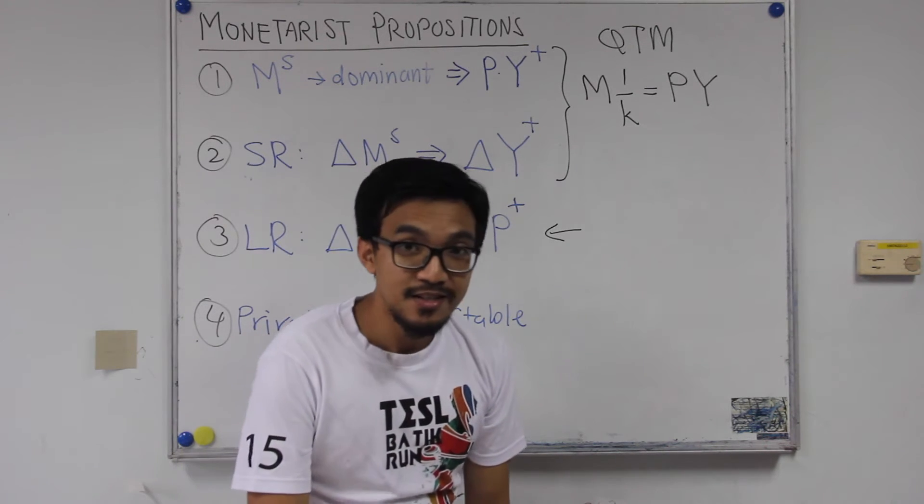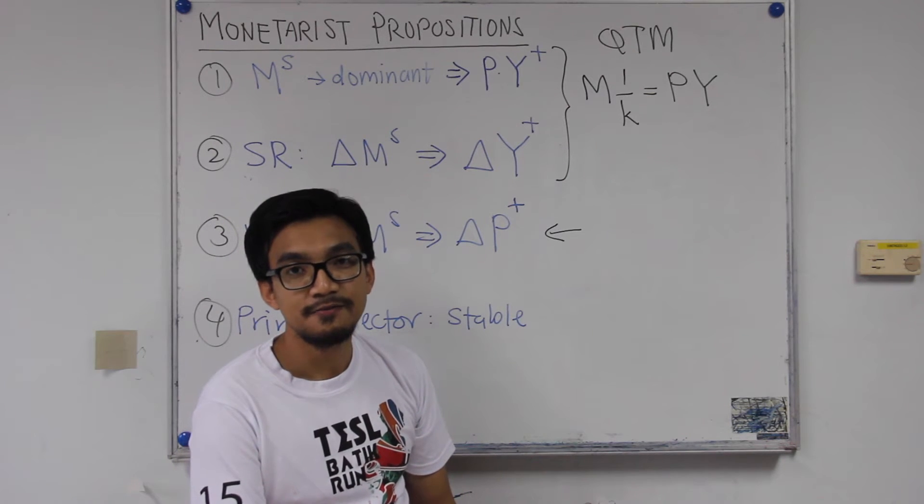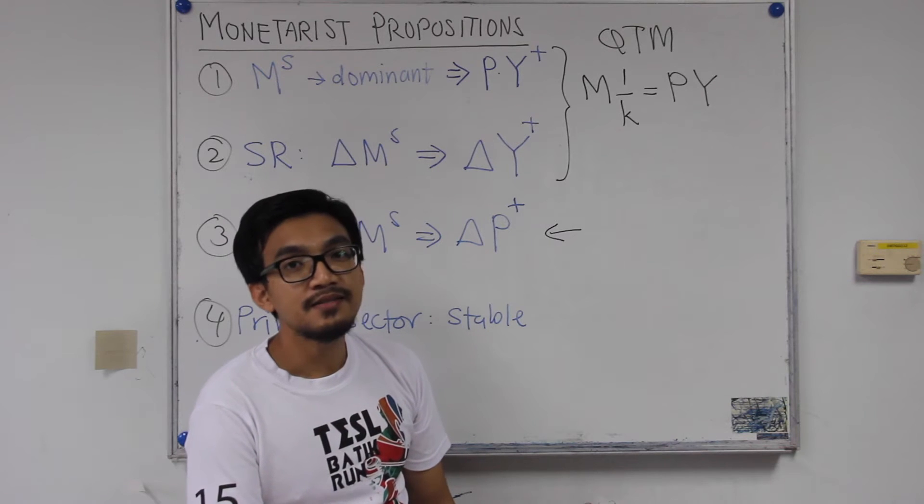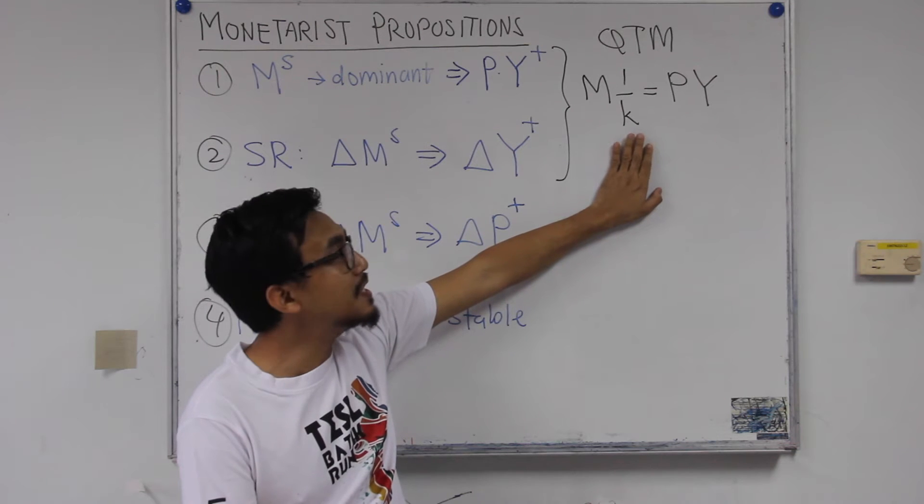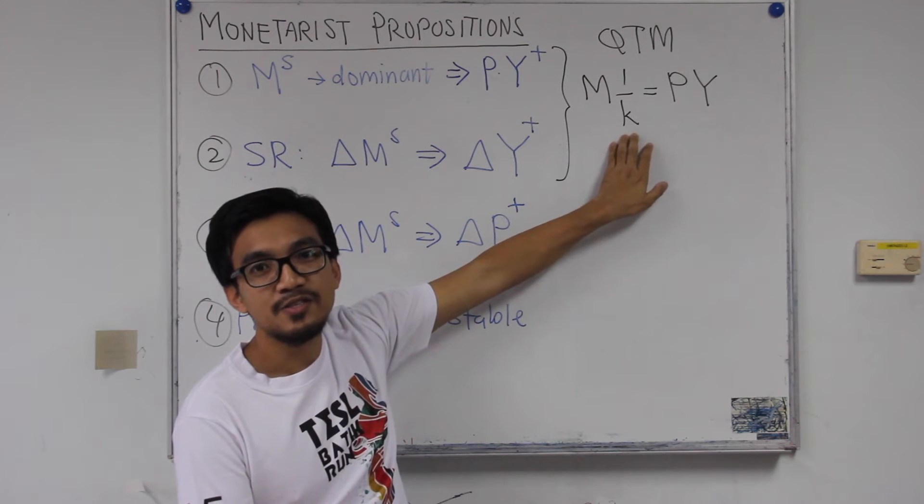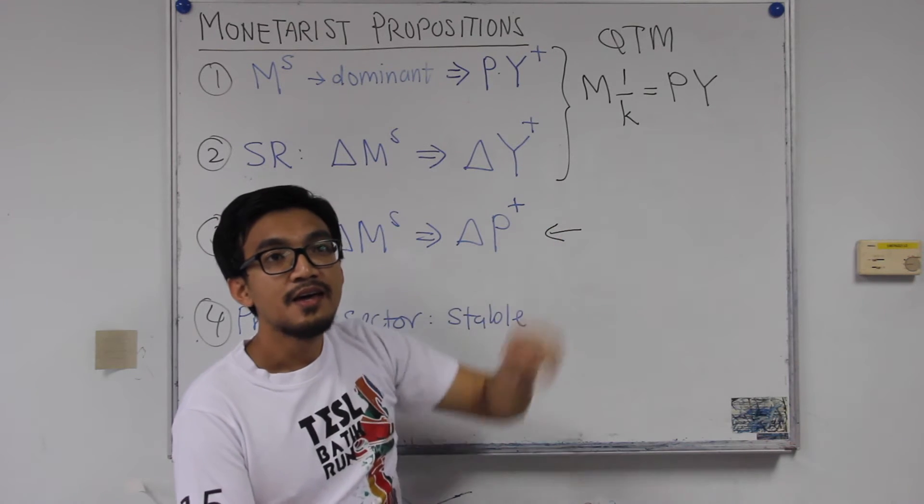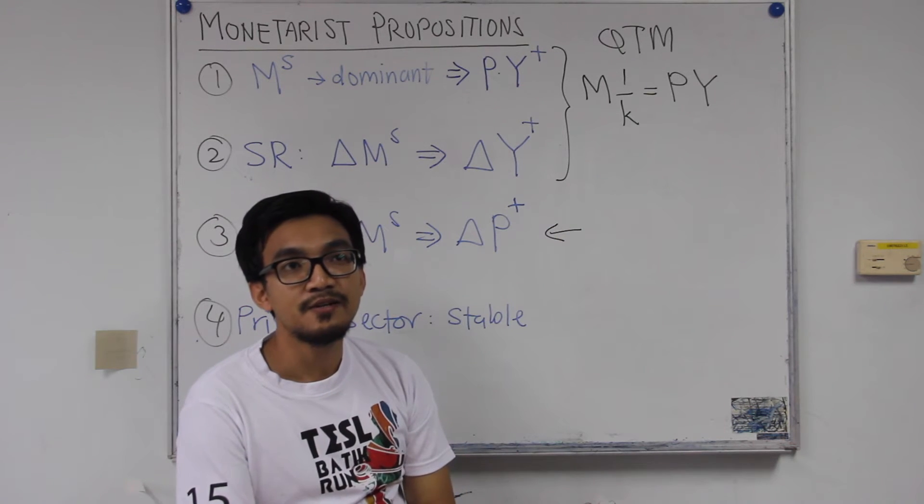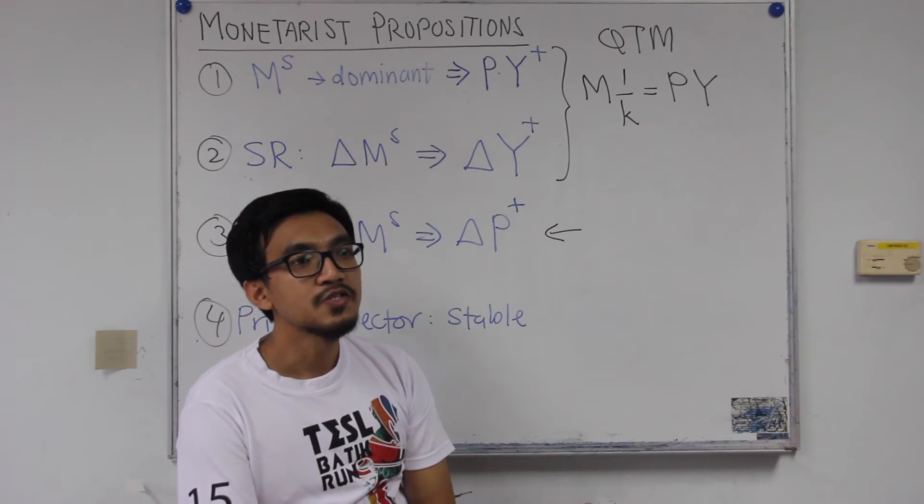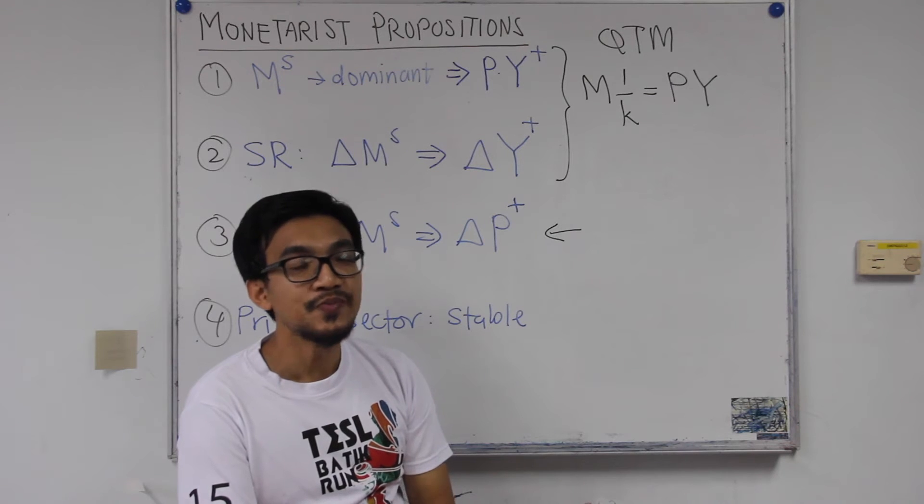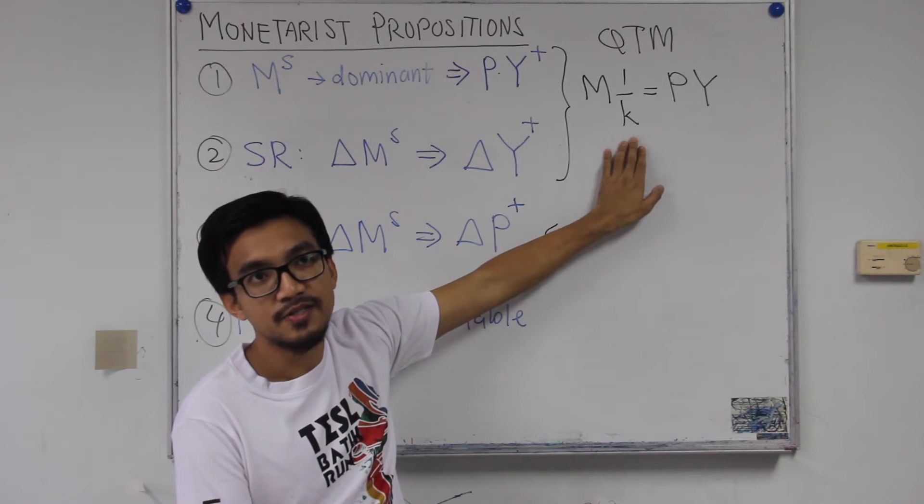However, the monetarists, when they come back later, so they kind of try to defend the classical view. So what Friedman did, Milton Friedman did is that he based on his argument, he expanded this case. So basically he looked at, he tried to explain what are the factors that can affect K. And in the end, as a conclusion, he believed that all those impacts are relatively small. So we can somehow simply assume that this K is can be assumed to be constant.